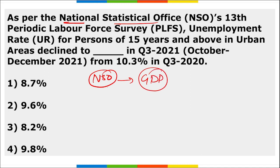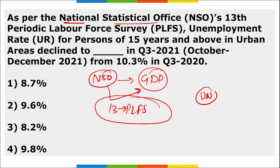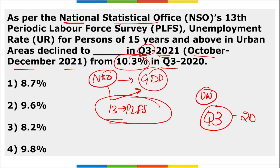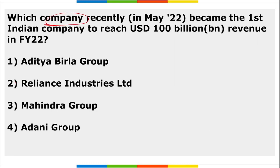As per the NSO — National Statistics Office — the 13th Periodic Labour Force Survey stated that the unemployment rate in urban areas declined to 8.7% in the third quarter of FY2021-22 (October–December 2021), down from 10.3% in the same quarter of 2020. This survey covered persons of 15 years and above in urban areas.